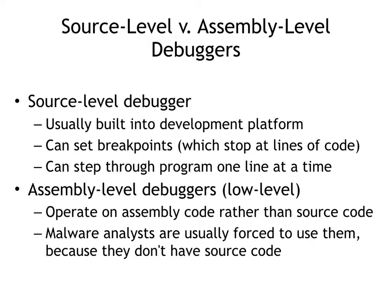When you use GDB, you can actually see the C source code and put breakpoints on lines of source code. That's what a source level debugger does, and that's what you use if you're a developer writing your own software in a high level language. But these low level debuggers are what we're doing, which is reverse engineering.